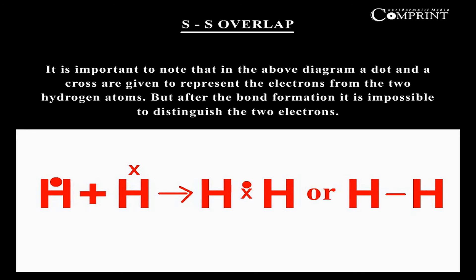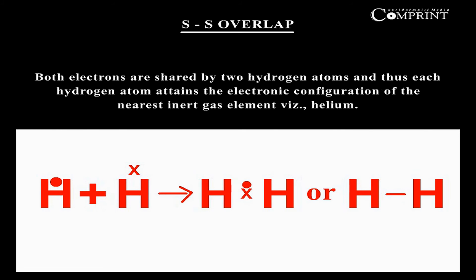It is important to note that in the above diagram, a dot and a cross are given to represent the electrons from the two hydrogen atoms. But after the bond formation, it is impossible to distinguish the two electrons. Both electrons are shared by two hydrogen atoms, and thus each hydrogen atom attains the electronic configuration of the nearest inert gas element, helium.